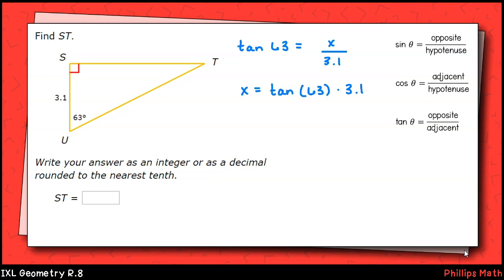To solve, we'll multiply both sides of the equation by 3.1. So x equals tangent 63 times 3.1. Our calculator gives approximately 6.08, so rounded to the nearest tenth, that will be 6.1.